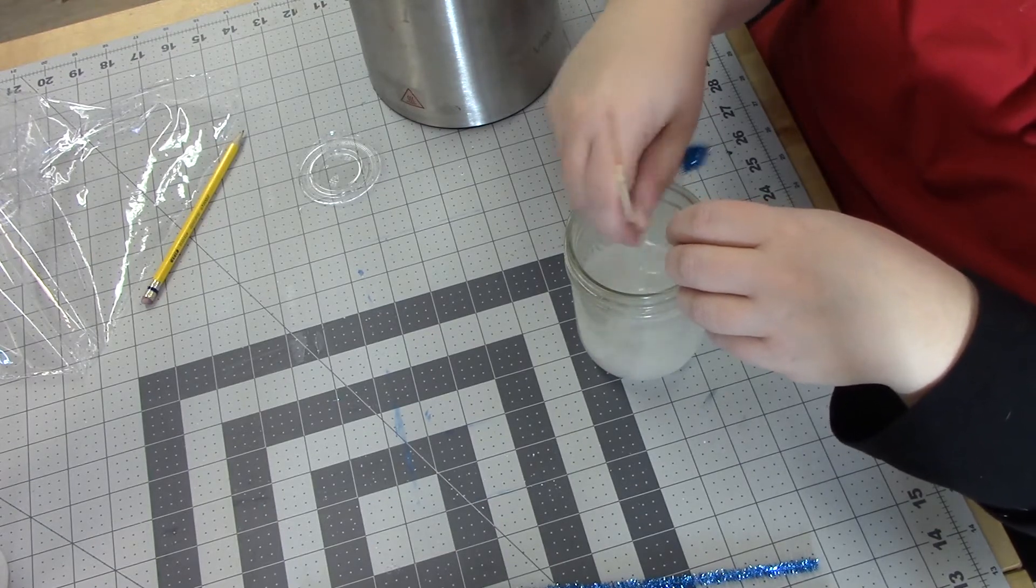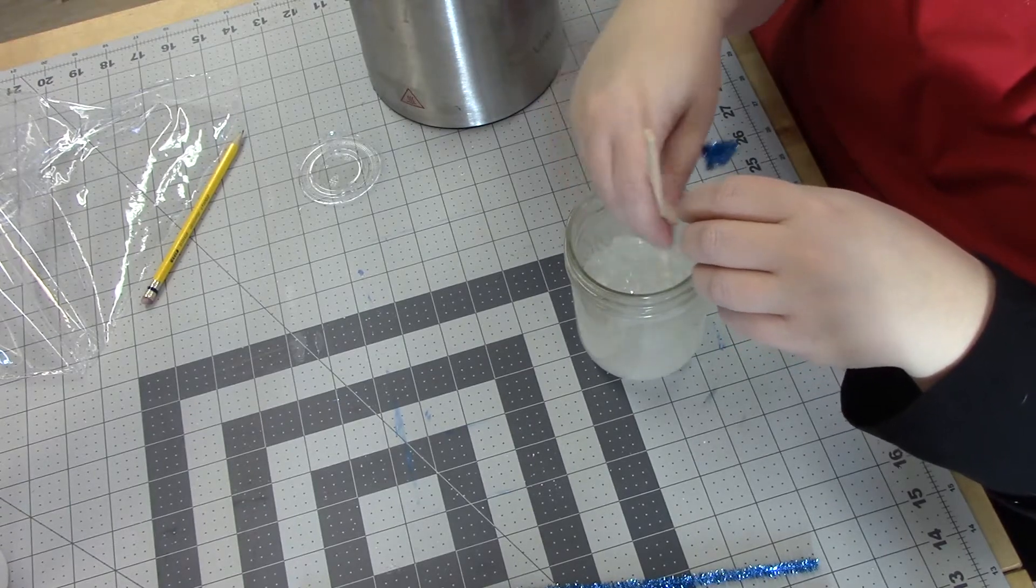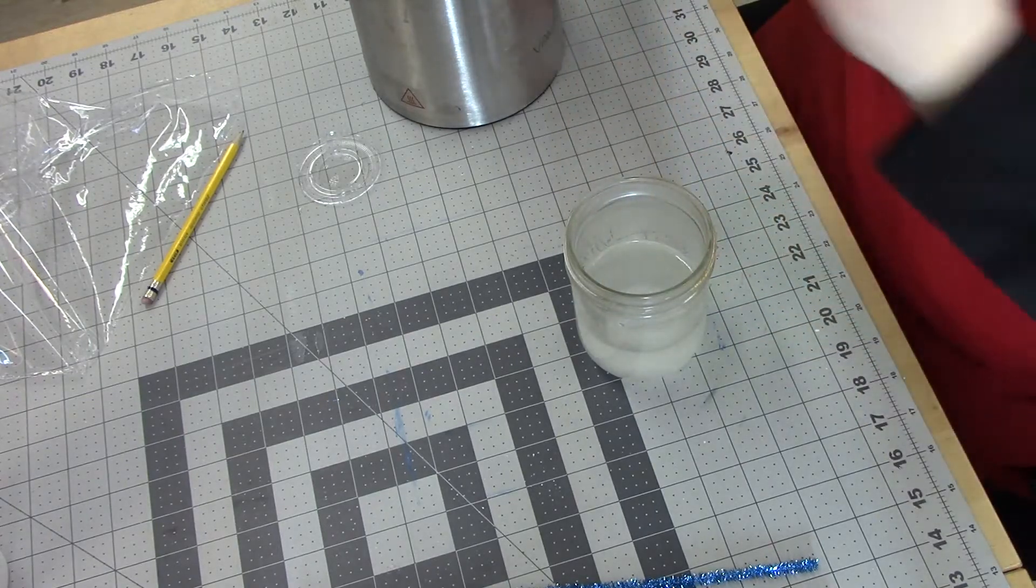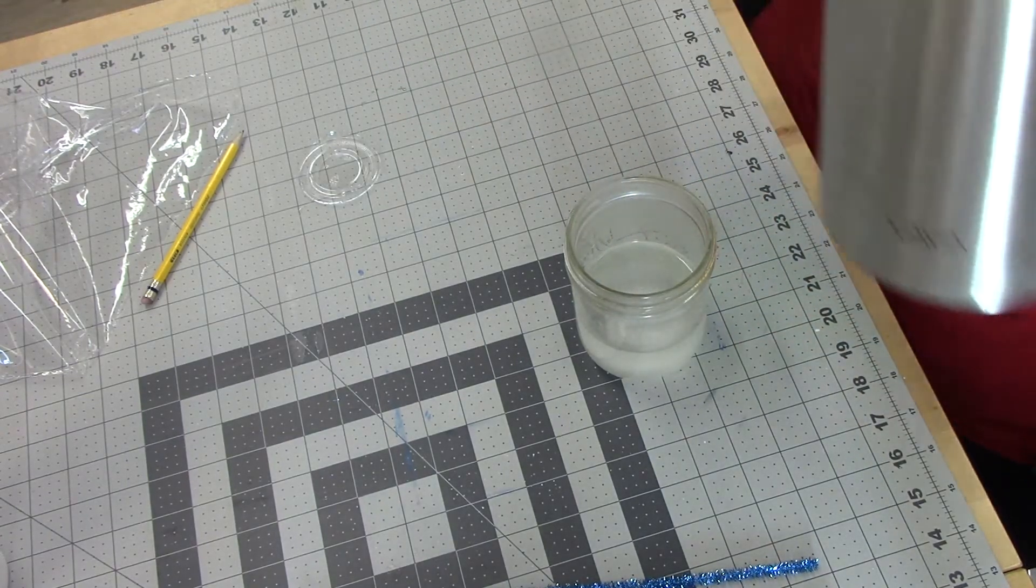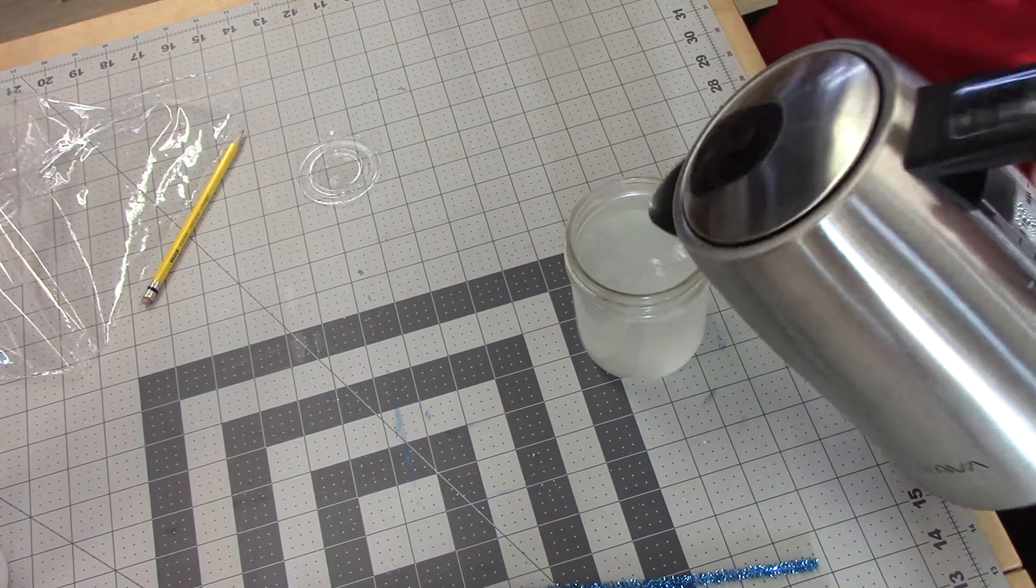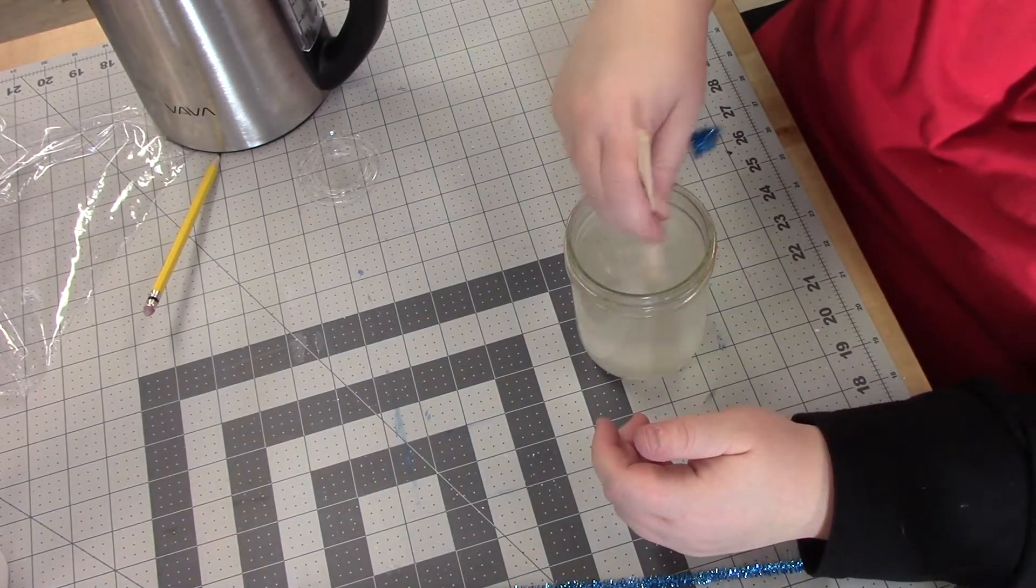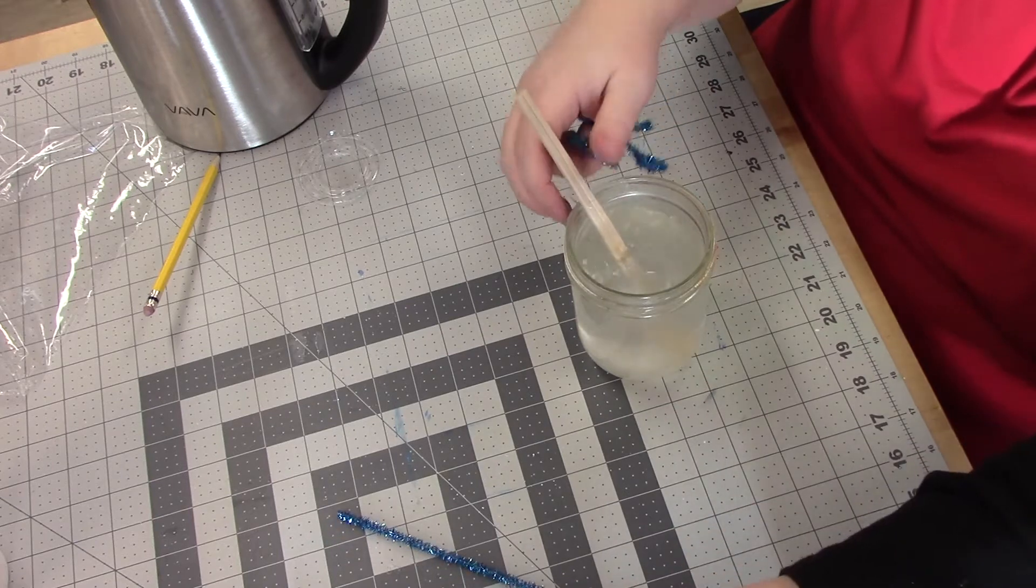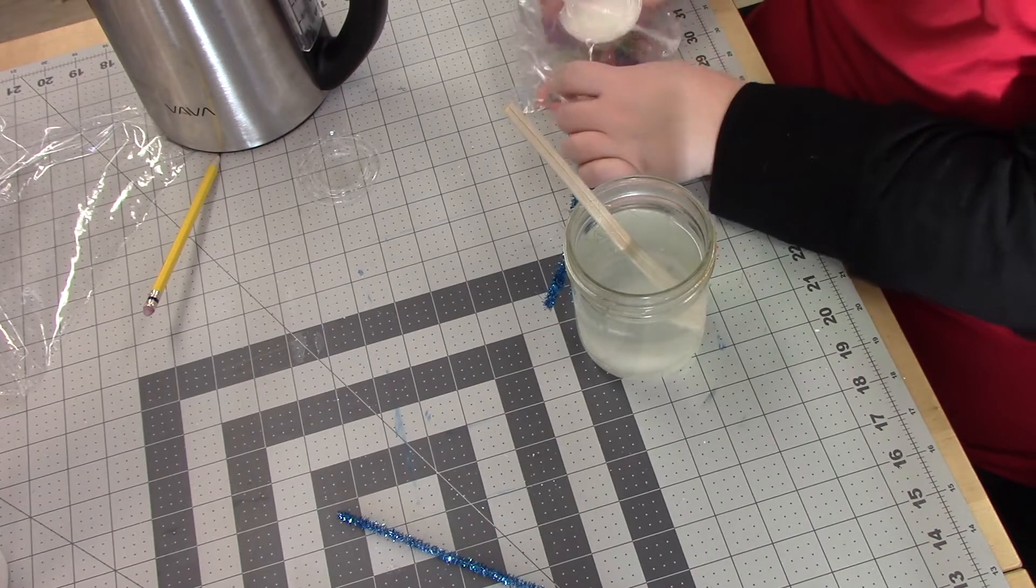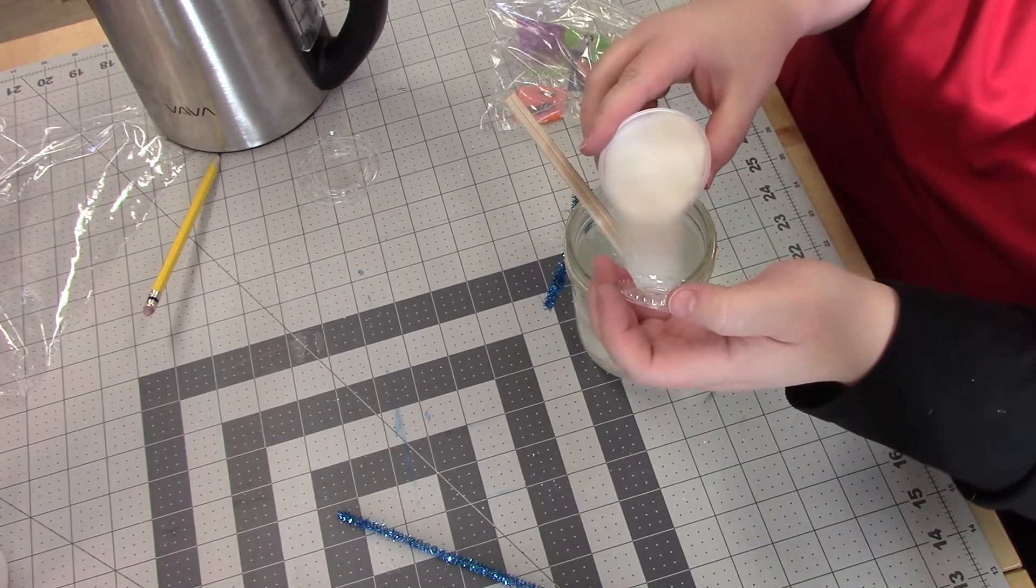All right, so you want to make sure that the borax is completely dissolved in your hot water before you dangle your snowflake. I'm going to put a little bit more because that's not quite a cup. Okay, and I know that that is a little over a cup of water, so just because I want to make sure that I got some really cool crystals growing, I'm just going to put a little bit more borax in.